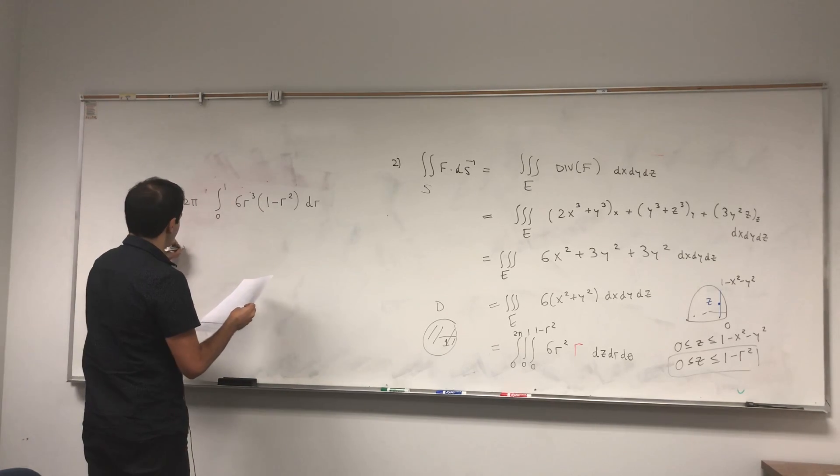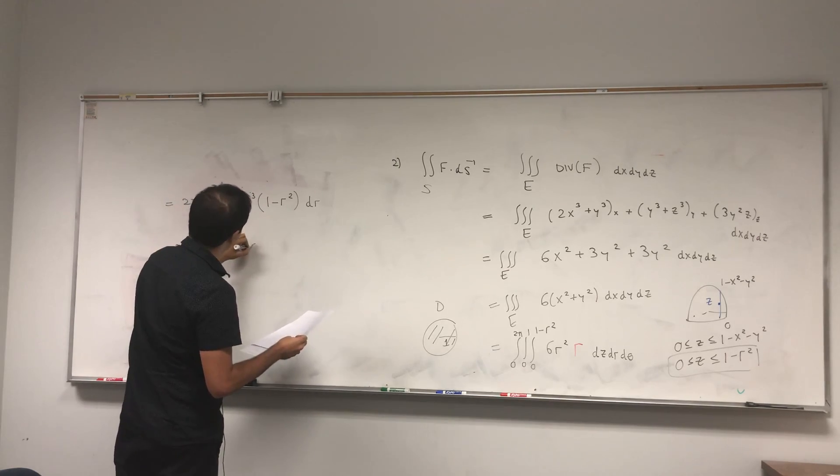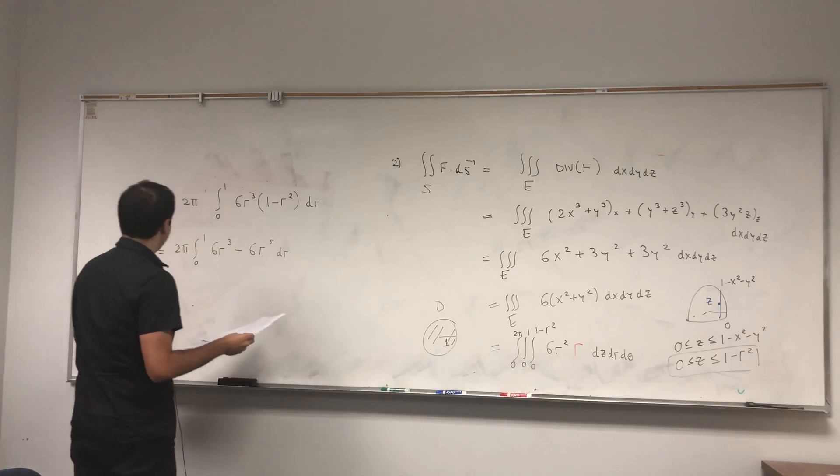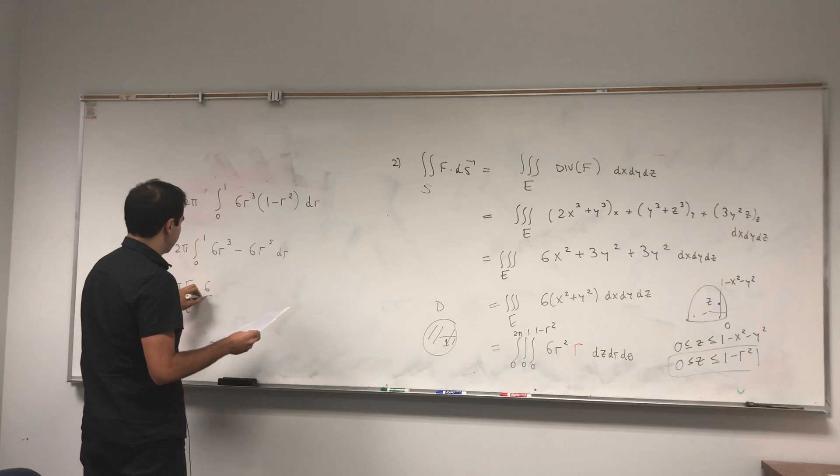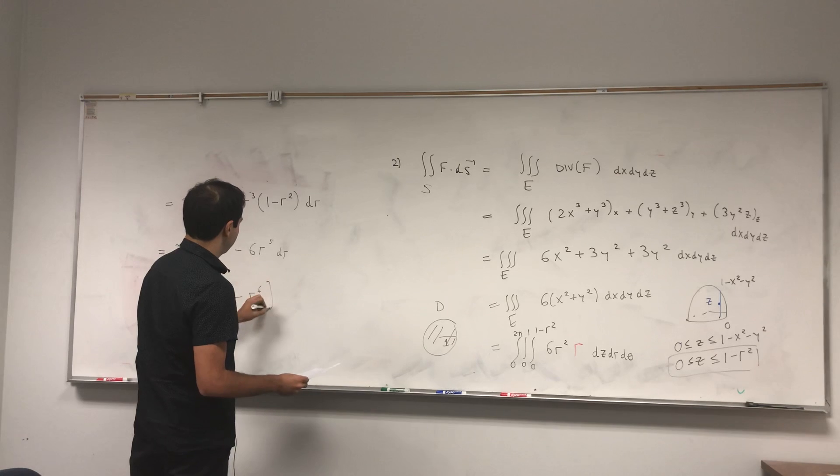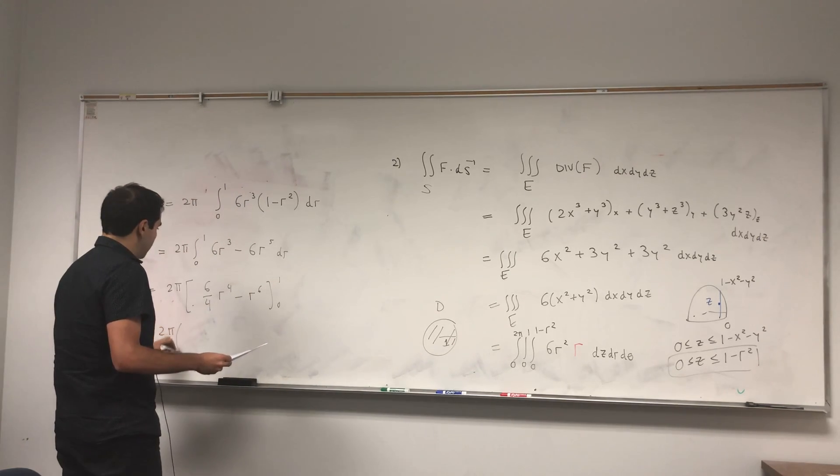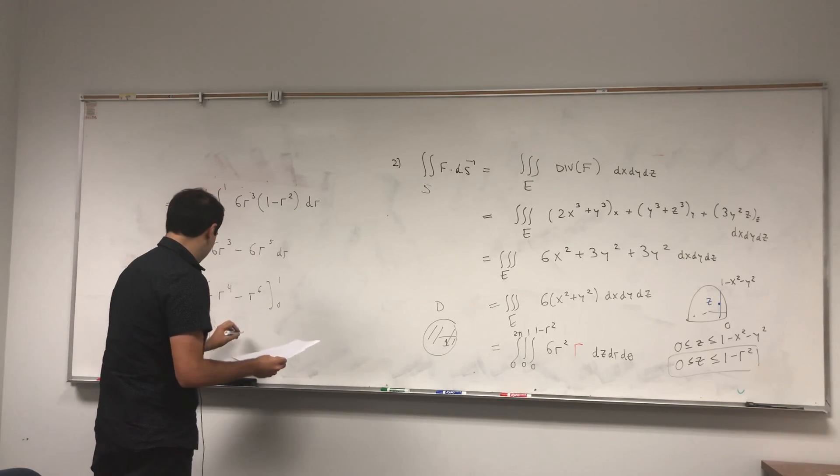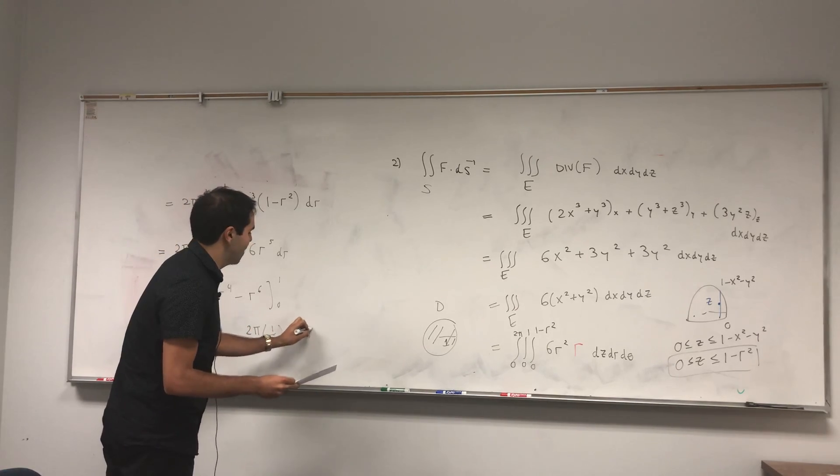So you get 2π times the integral from 0 to 1 of 6r³ - 6r⁵ dr. Then you get 2π times (6/4·r⁴ - r⁶) from 0 to 1. You get 2π times (3/2 - 1), and that's 2π times 1/2, which is just delicious π.